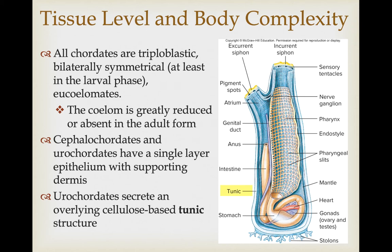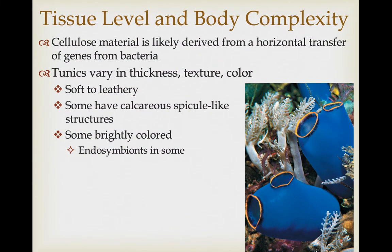The fact that the tunic has cellulose in it is interesting because animals don't produce cellulose. This cellulose material is likely derived from horizontal gene transfer from bacteria — at one point in time, DNA from a bacterium that can produce cellulose was incorporated into the DNA of a tunicate, and viruses are often involved in this transfer process. The tunics themselves vary in thickness, texture, and color, and can be very soft to very leathery. Some even have calcareous spicule-like structures embedded within them.